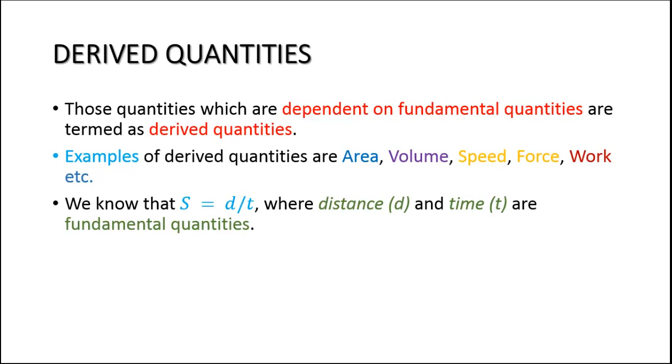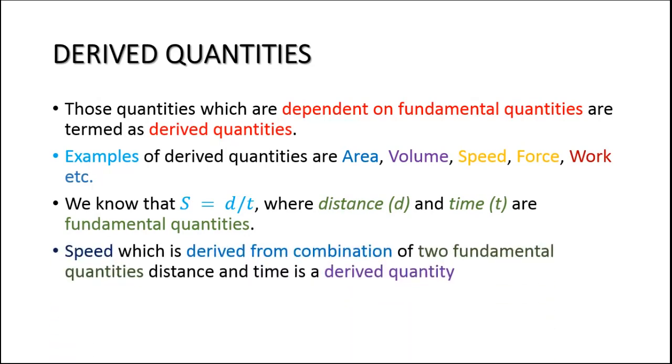For example, speed. Speed is a derived quantity. We know that speed s is equal to distance divided by time, where distance and time are fundamental quantities. And the speed is derived from the combination of distance and time.